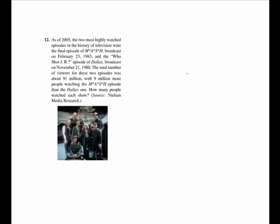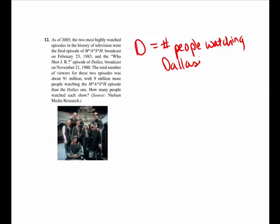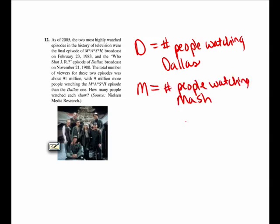In problem number 12, we're told that the number of viewers watching MASH on the final episode plus the number of viewers watching Dallas on the final episode added up to 91 million, with 9 million more people watching MASH. The first step is to identify two variables: D, the number of people watching Dallas on the final episode, and M, the number of people watching MASH on the final episode.